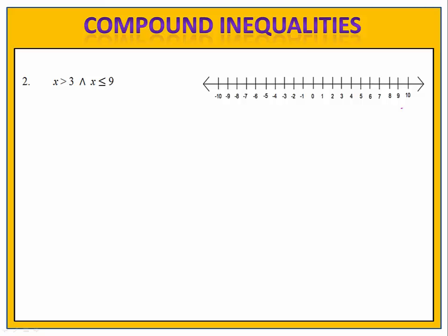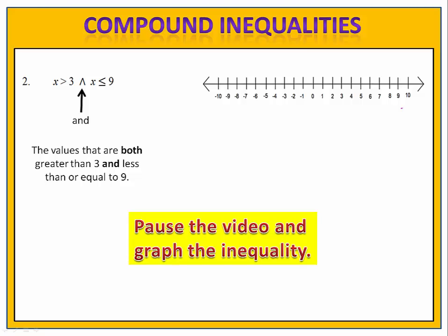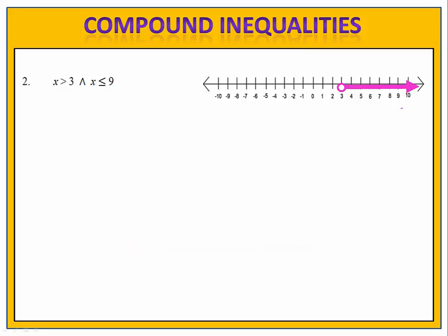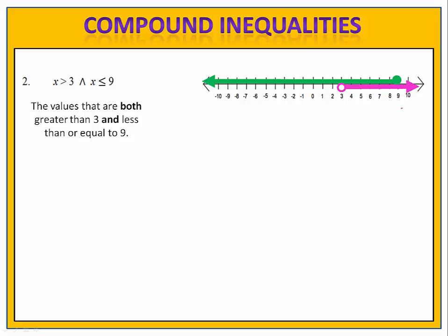In exercise two, we have a compound inequality: x is greater than three and x is less than or equal to nine. Because it's an and, we want the values that meet both criteria — numbers that are both greater than three and less than or equal to nine. We begin by graphing x is greater than three, then graph x is less than or equal to nine. Because this is an and and we're looking for the intersection, we look for values that are in both. That's the interval between three and nine.